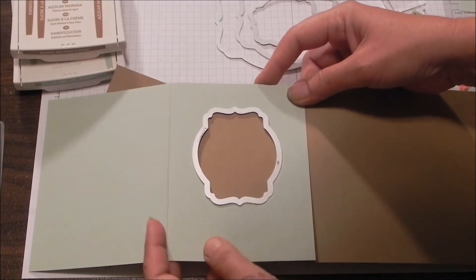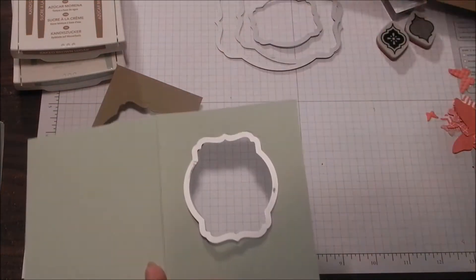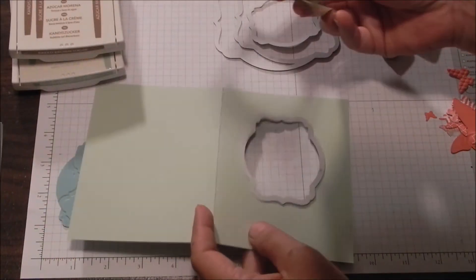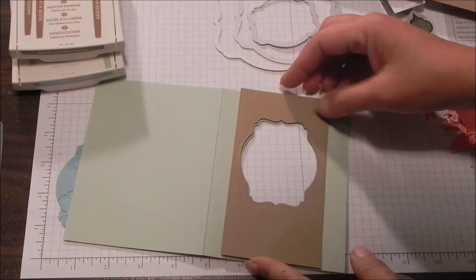Once again position that perfectly, and then once that window is cut out you can trim it to the width you want. In this case it's three inches wide, top to bottom.